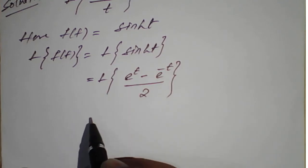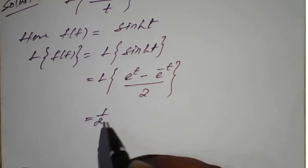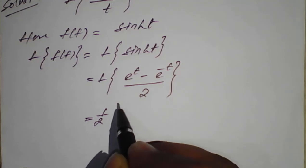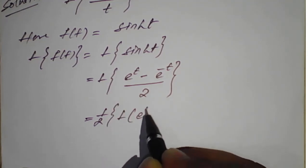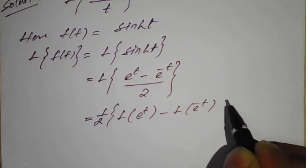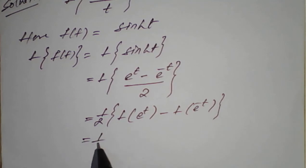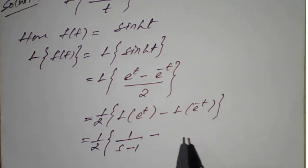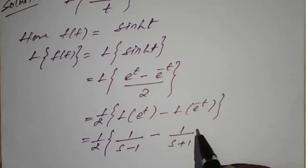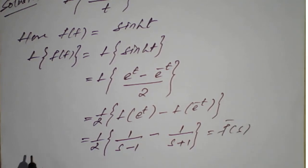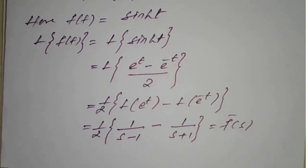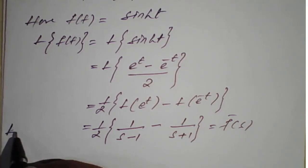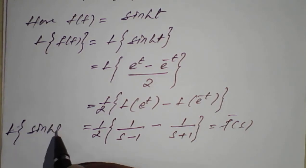Now we apply the Laplace transform. Taking 1/2 as a common factor outside, we get (1/2) · [Laplace of e^t − Laplace of e^(−t)]. This simplifies to (1/2) · [1/(s−1) − 1/(s+1)]. This is our F'(s), the result of the Laplace transform of sinh(t).